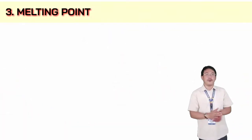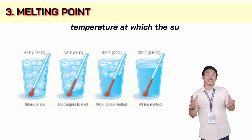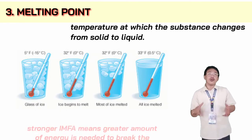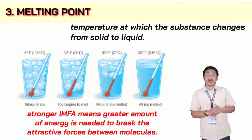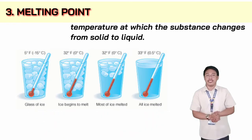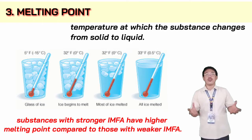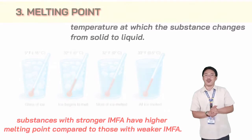We also have the melting point. Melting point is the temperature at which a substance changes from solid to liquid. Stronger intermolecular forces means a greater amount of energy is needed to break the attractive forces between molecules. Substances with stronger intermolecular forces of attraction have higher melting points compared to those with weaker intermolecular forces of attraction.